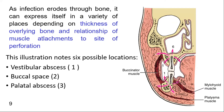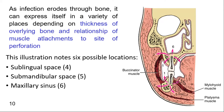Failure to control these infections may cause them to spread to secondary spaces including the infraorbital, canine space, and orbital spaces. As infection erodes through bone, it can express itself in a variety of places depending on the thickness of overlying bone and the relationship of muscle attachments to the site. For more detail, watch our video about spread and progression of infections.